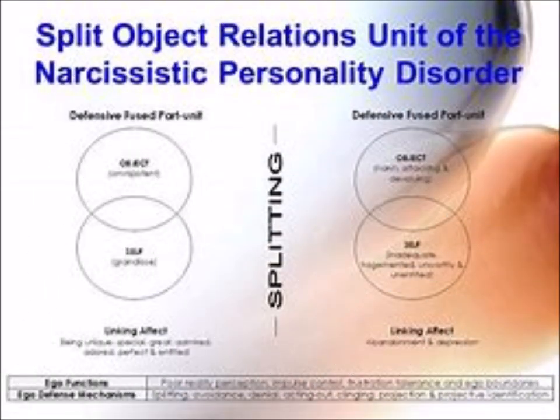In conclusion, taking an integrative approach such as Masterson's just makes the most sense. Nearly every theorist has something to offer as infant research and science catch up with one another. But all in all, having experienced a narcissist, you can see exactly where they are stuck developmentally.